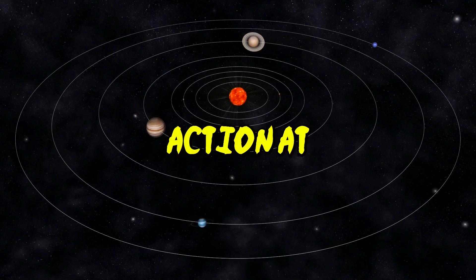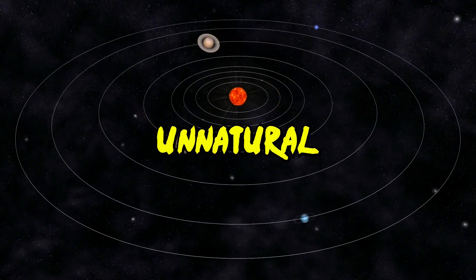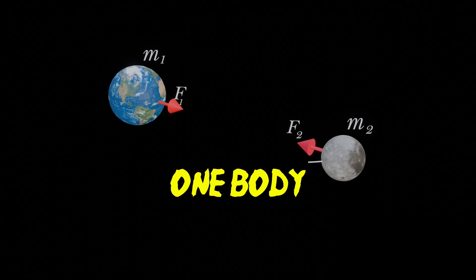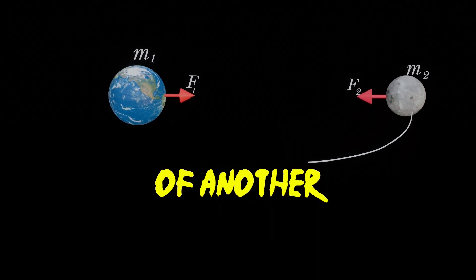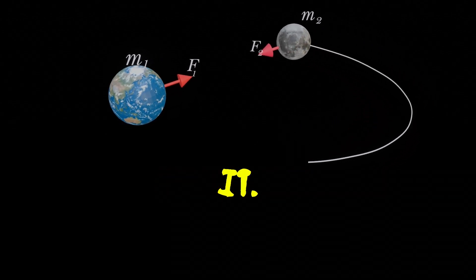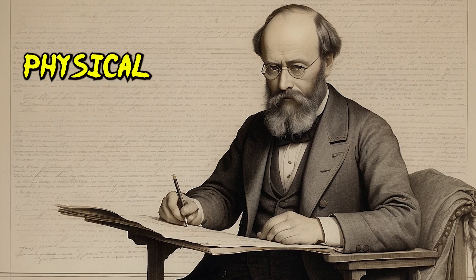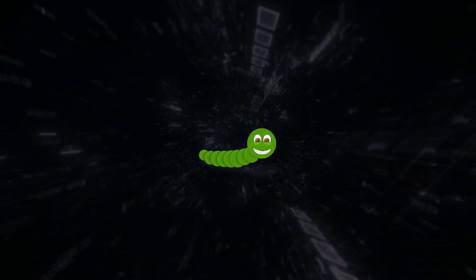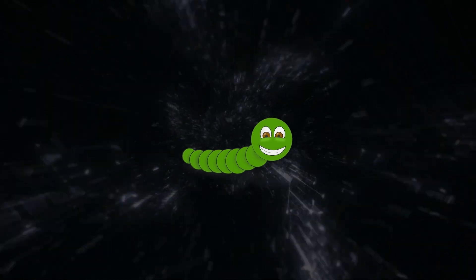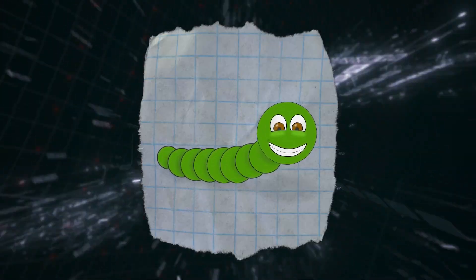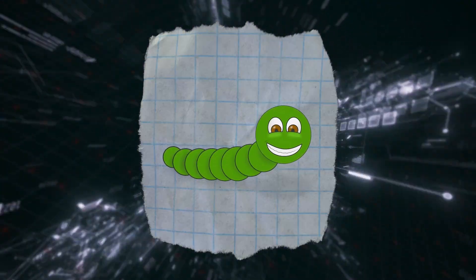In response, Riemann developed a radically new physical picture. To illustrate his ideas, Riemann apparently borrowed from Gauss's analogy of a two-dimensional bookworm living on a two-dimensional piece of paper. Grab a piece of paper and put a two-dimensional worm in each opposite corner.